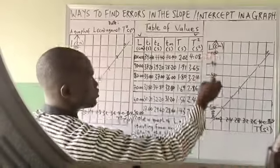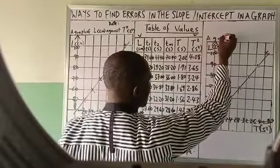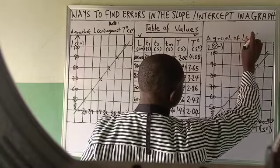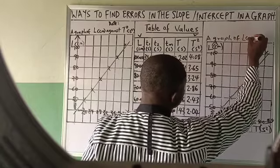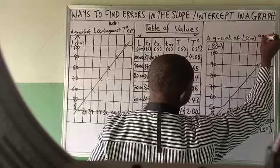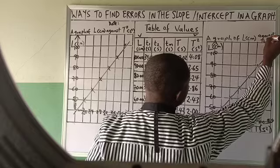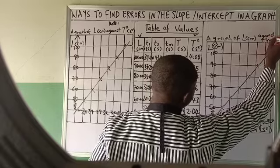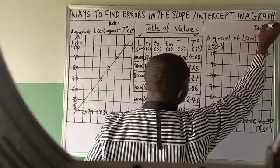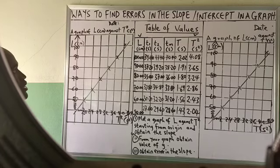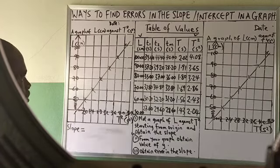Write the title here: the graph of L in cm against T squared in seconds squared. Then put your date. Next, we have to see how to get our slope.